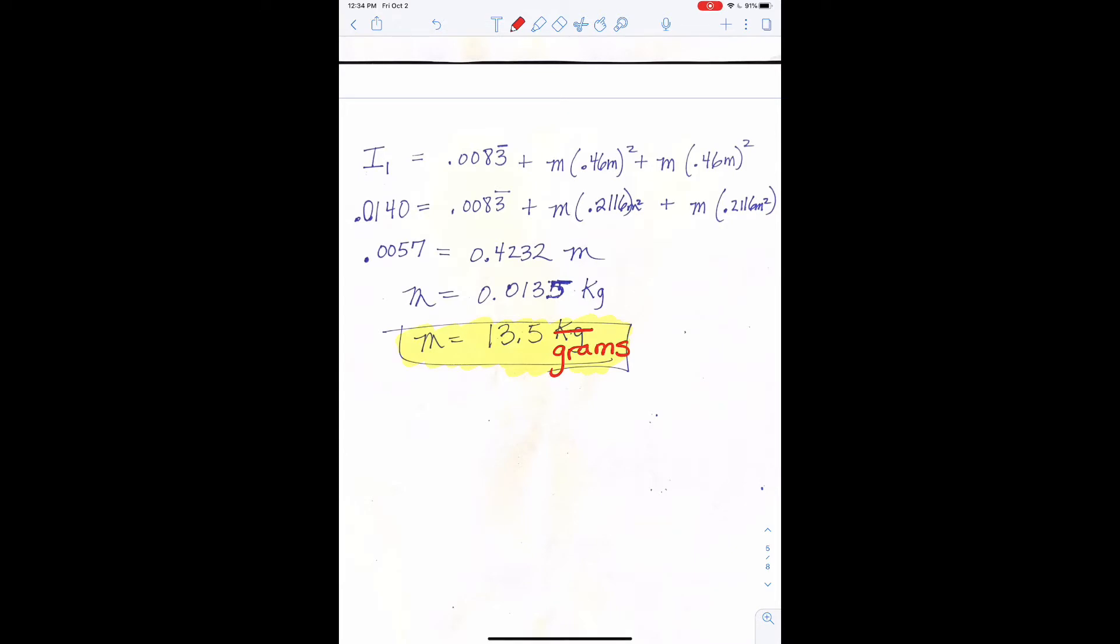And in calculating the mystery mass, if I scroll down here, you can see that with this new moment of inertia of 0.0140, calculating the mystery mass out at the ends, it puts it from greater than what we had in class of 3.5 grams to around 13.5 grams. Just spotted that error. Let me fix that.